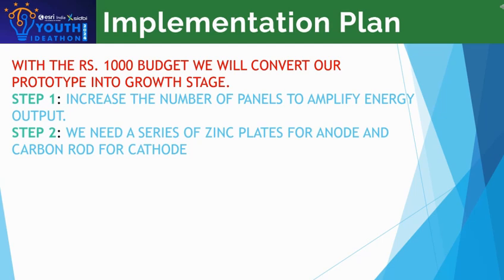Implementation plan: with a budget of 1000 rupees, we will convert our prototype into a growth stage. In step one, we will increase the number of panels to amplify energy output. In step two, we need a series of zinc plates for the anode and carbon rods for the cathode.